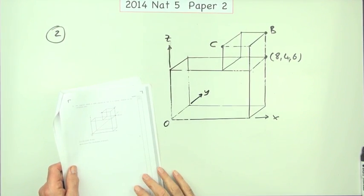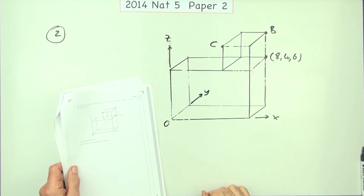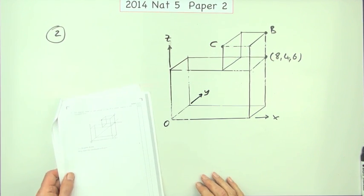Number 2 then from the 2014 National 5 Paper 2, the calculator paper, although you don't really need a calculator for this question so it could have been Paper 1 if there was room for it there.